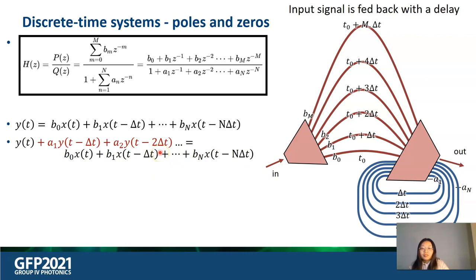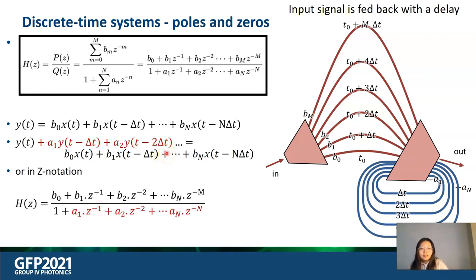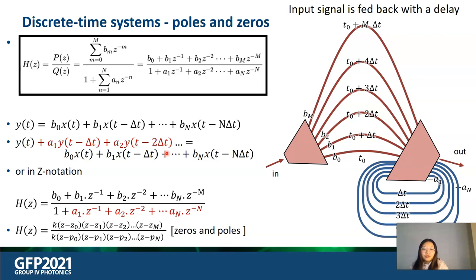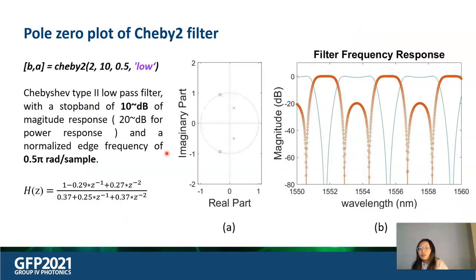Then the response in the time domain for the whole system has the following expression. The output Y(t) is a function of the X(t) and delayed Y(t). The whole transformation in the Z domain is denoted as H(z). The roots of the numerator is called zeros and